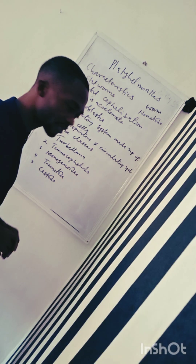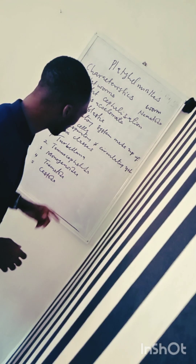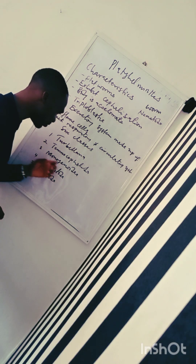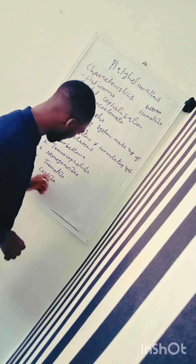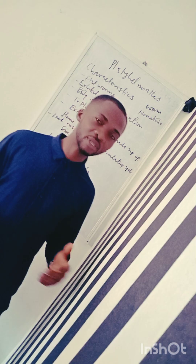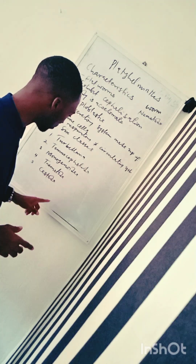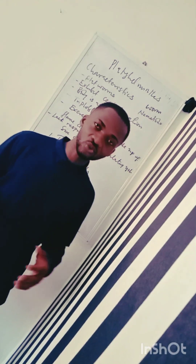Now let's look at the classes of Platyhelminthes: we have the Turbellaria, the Temnocephalida, the Monogenea, the Trematoda, and the Cestoda. The Turbellaria and Temnocephalida are free-living organisms — they are not parasitic, meaning they don't live in or on the body of a host at the expense of the host. We are going to concentrate on the Trematoda and the Cestoda.